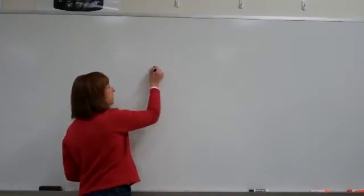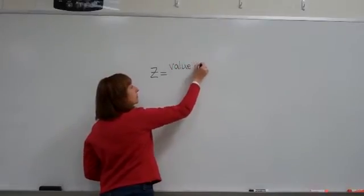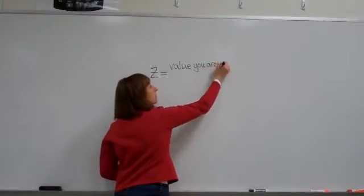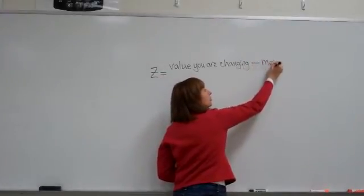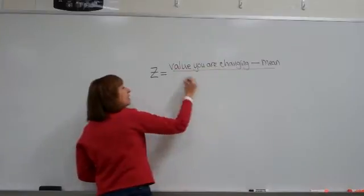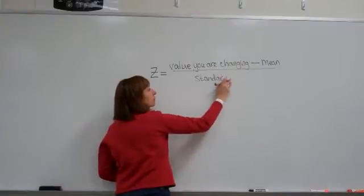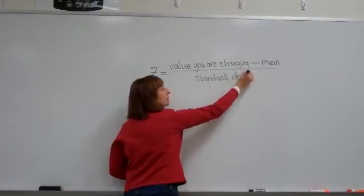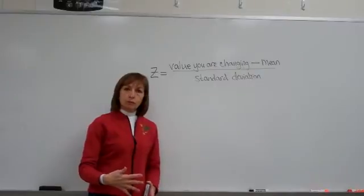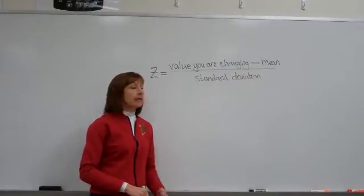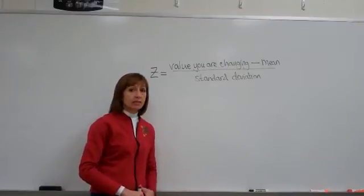The formula for a z-score is: z equals the value you are changing minus the mean of the distribution, divided by the standard deviation of the distribution. It's helpful to think of it that way because as we go to different distributions, like sampling distributions of the sample mean, we need to adjust a little bit for distributions that are different than just the distribution of the individual numbers.